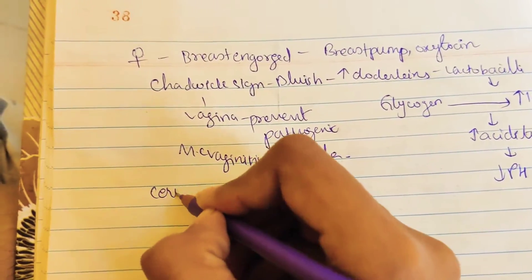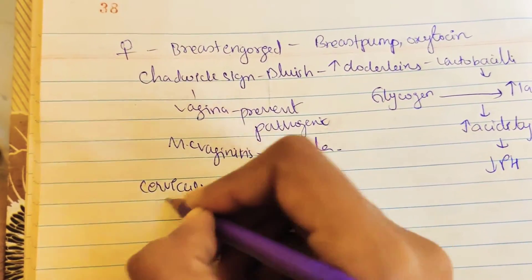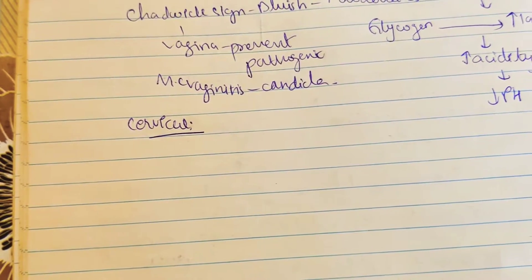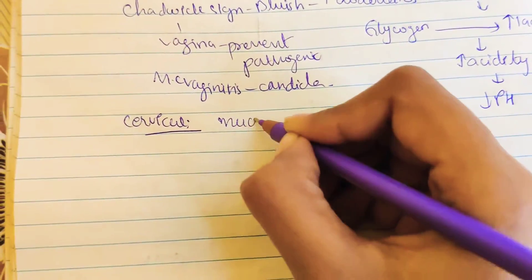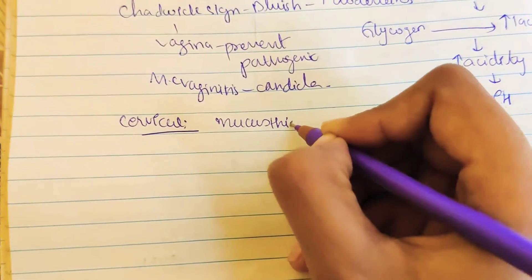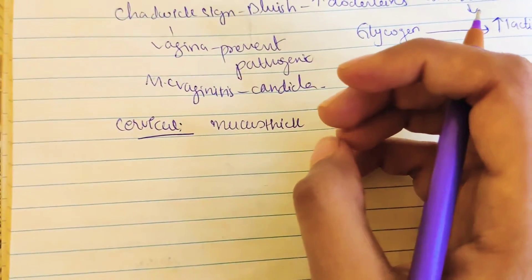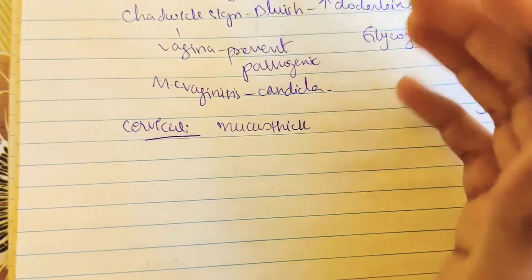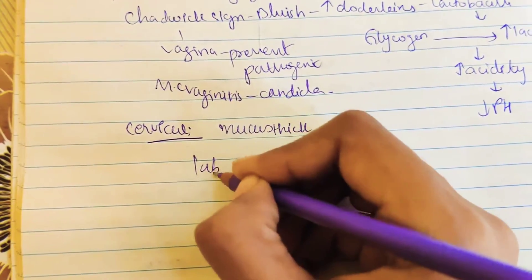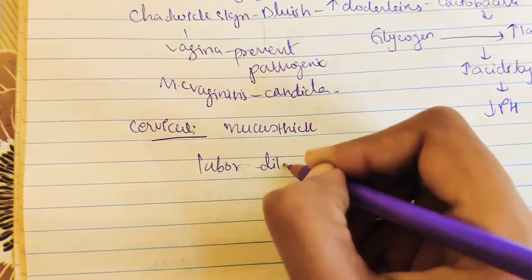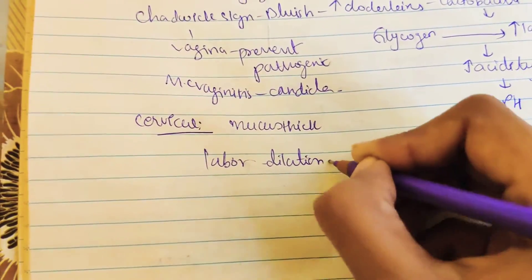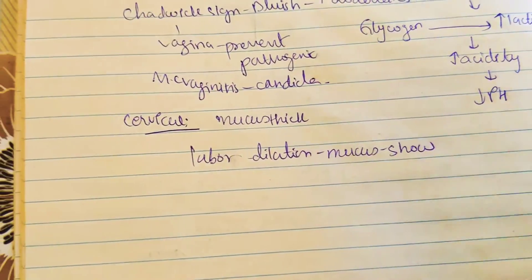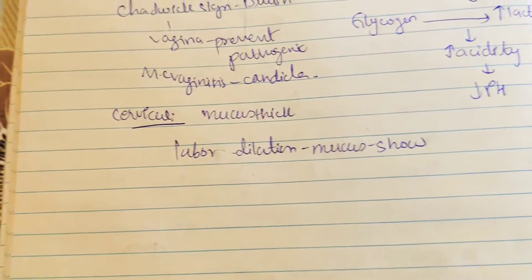In cervical changes during pregnancy, the cervix forms a thick mucus plug which prevents infection. This mucus is released when the cervix dilates at the time of labor, which is called the 'show.'